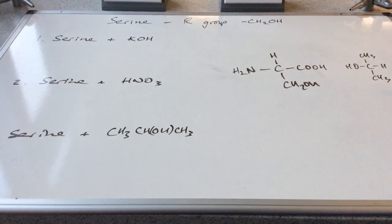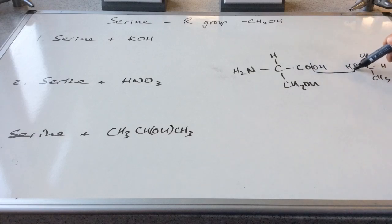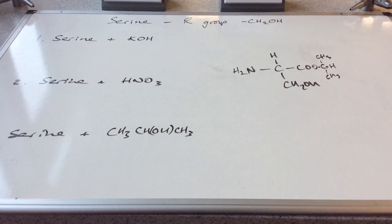And then the final one, you can see I've drawn a propan-2-ol this way around. It's got to take off the OH and an H to get my water molecule, which means that the ester will look like that.